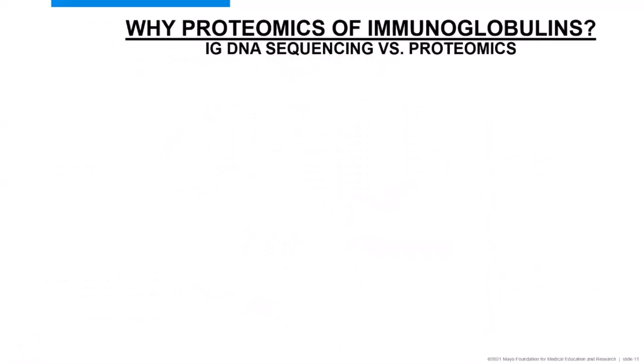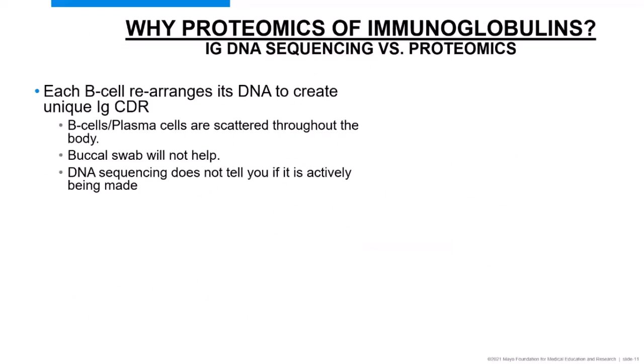Why proteomics of immunoglobulins? They're the best target. Each B cell rearranges its DNA to create a unique CDR region, and since B cells and plasma cells are scattered throughout the body, you can't access this genomically. A buccal swab would miss everything about B cell immunoglobulins, and the DNA sequence doesn't tell you how much protein is actually being produced.